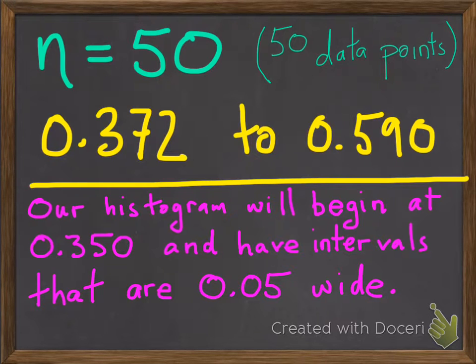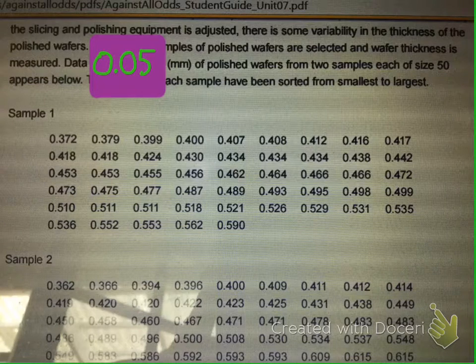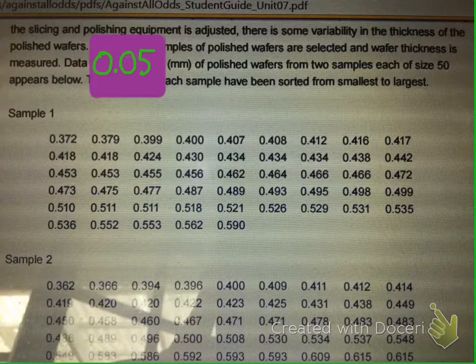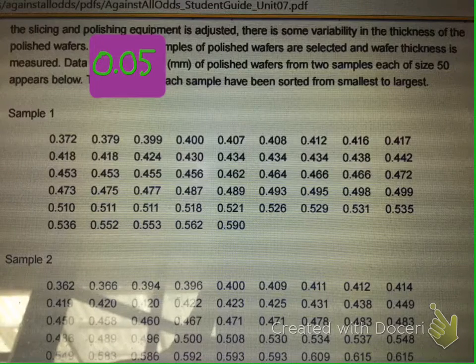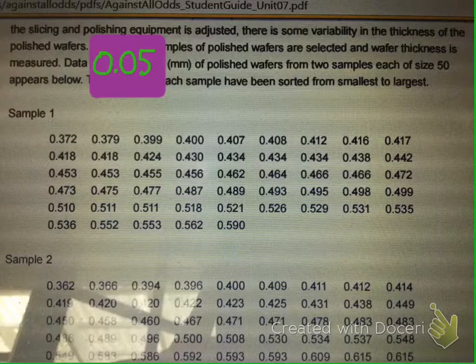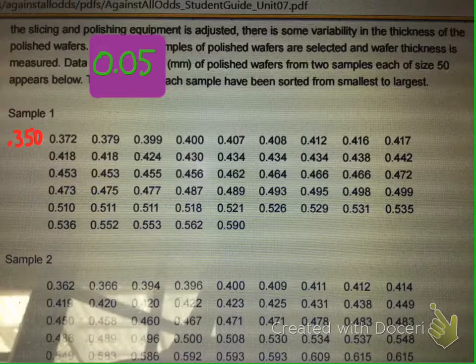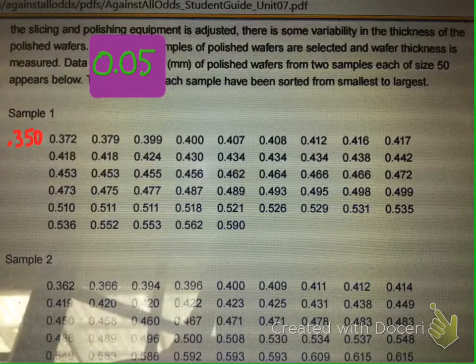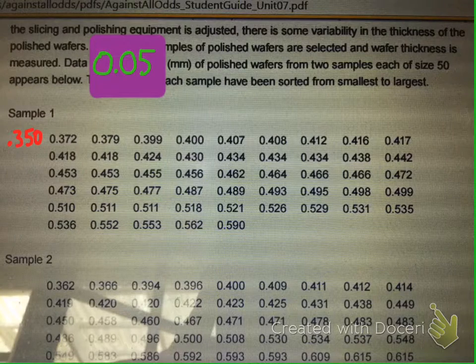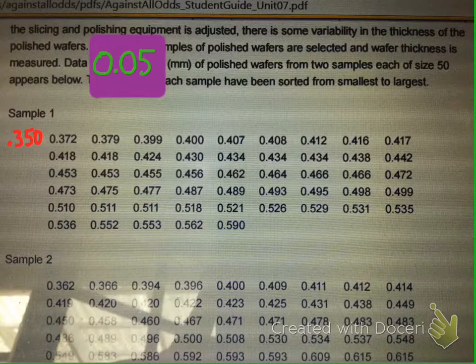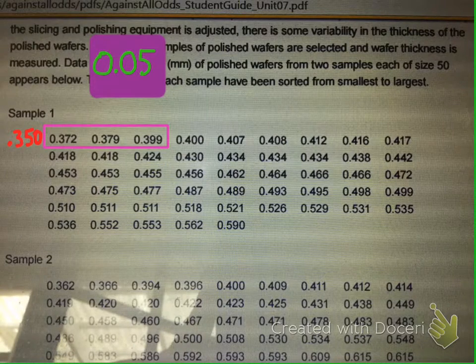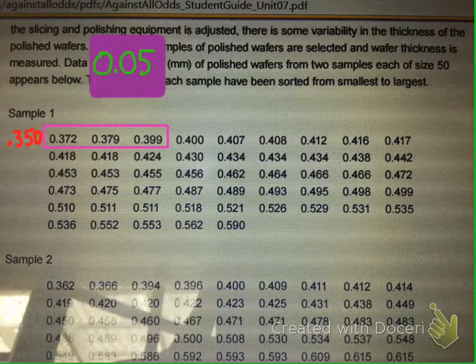Let's take a look at the data. There's the data set right there, taken directly out of your materials if you're in one of my classes. We're using a width of 0.05 and we're starting at 0.350. Considering those two numbers, in our first data class there are only three numbers, just those first three. 0.40 would actually be in the next data interval.